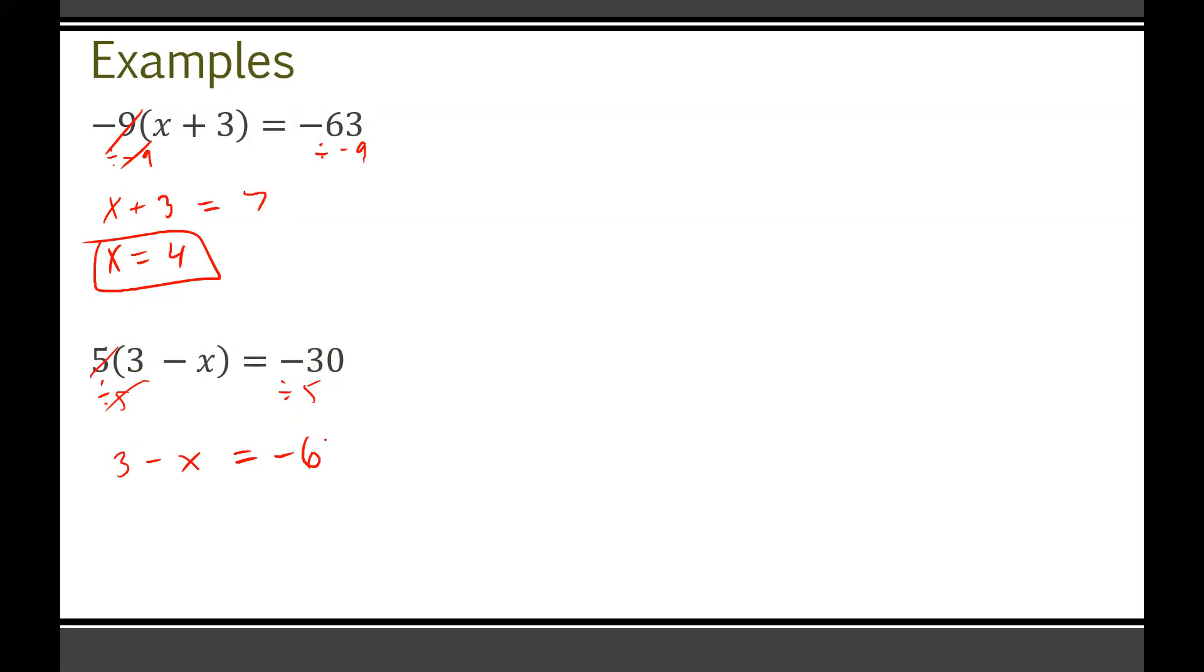That'll give me three minus x equals negative 30 divided by five is negative six. Now this is where things get a little bit tricky. I remember before the break, there were a lot of people who got caught up on these ones. It's three minus x equals negative six. Well, we want to get x all by itself. So maybe what I want to do first is get rid of this three. Technically this is a positive three. So to get rid of a positive three, we need to minus three from both sides.